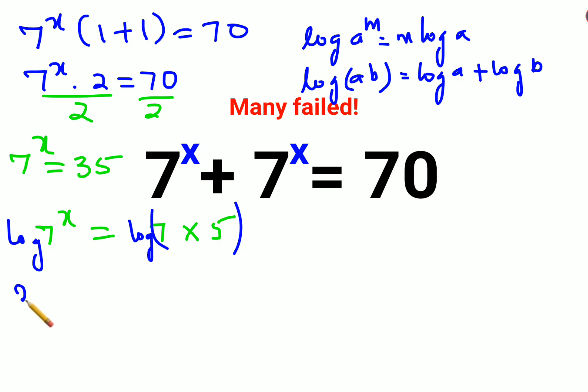Using the same rules here, we can write this as x log 7 equals to log 7 plus log 5.